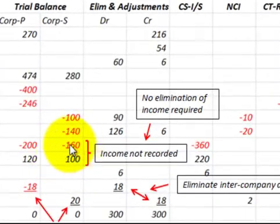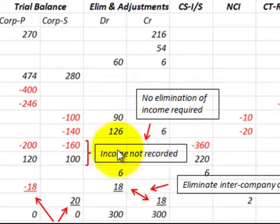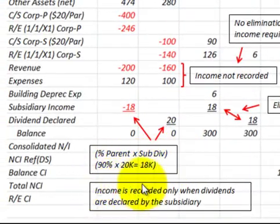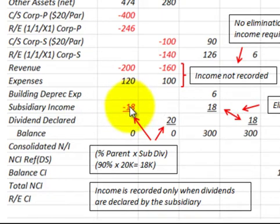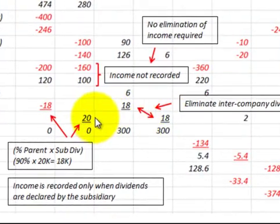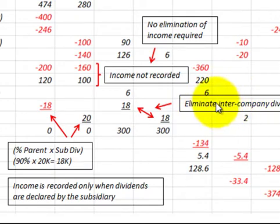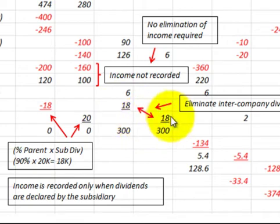Looking at how we handle income from the subsidiary: revenues exceeded expenses by $60,000, but using the cost method, this income is not recorded, so there's no income elimination required. The only income recorded is when the subsidiary declares a dividend. The subsidiary declared a $20,000 dividend, so the parent receives 90% — $18,000 — and the non-controlling interest gets $2,000. We then eliminate the intercompany dividends by debiting subsidiary income for $18,000 and crediting dividends declared for $18,000.